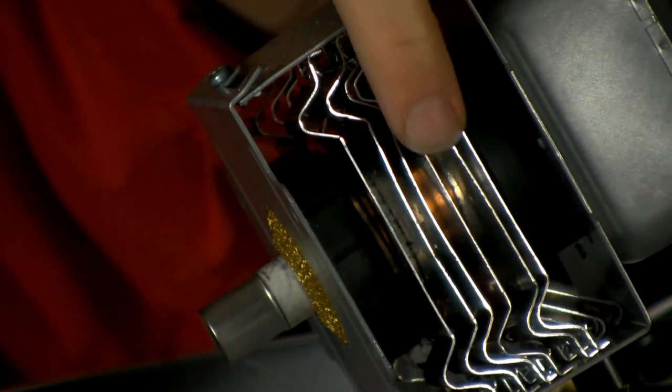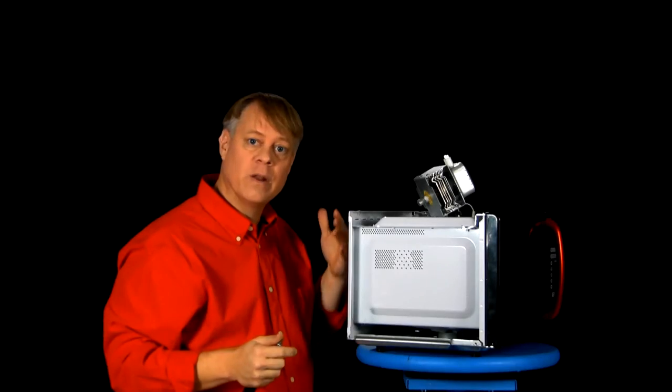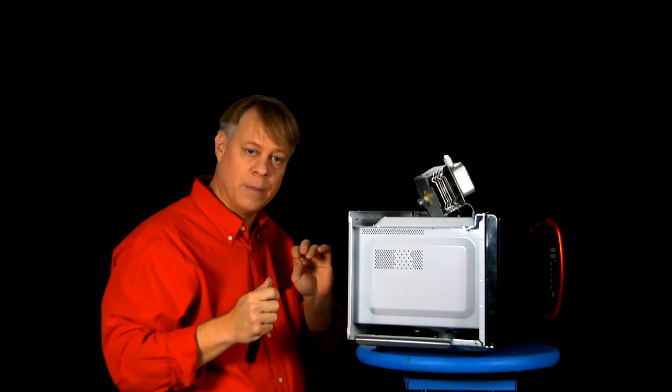The vacuum tube is inside here. These are cooling fins, thin pieces of metal that dissipate the heat as the magnetron operates.